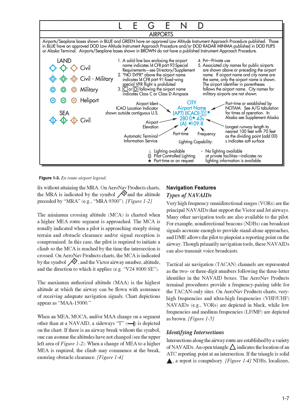The maximum authorized altitude, MAA, is the highest altitude at which the airway can be flown with assurance of receiving adequate navigation signals. Chart depictions appear as MA-15000. When an MEA, MOCA, and/or MAA change on a segment other than at a NAVAID, a sideways T is depicted on the chart. If there is an airway break without the symbol, one can assume the altitudes have not changed. When a change of MEA to a higher MEA is required, the climb may commence at the break, ensuring obstacle clearance.